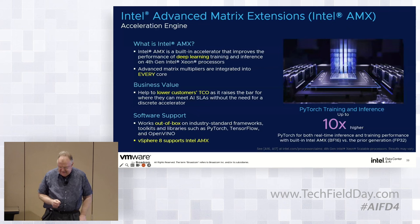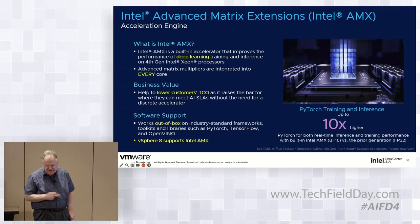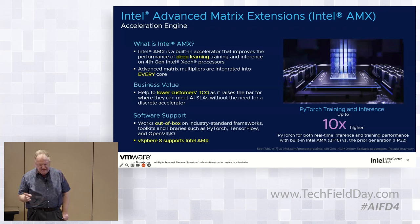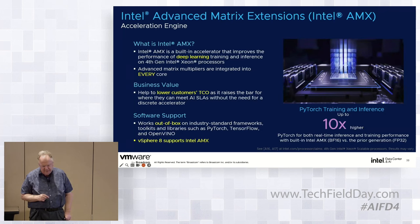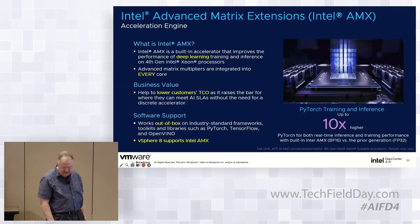AMX is an AI accelerator built into Sapphire Rapids and Emerald Rapids Xeon CPUs. The new instructions available in these CPUs are designed to work on matrices to accelerate AI and machine learning workloads. Advanced matrix multipliers are integrated into every core in the CPU. If you purchase Sapphire Rapids or Emerald Rapids servers, you can run AI workloads on the CPUs without a separate GPU accelerator, and vSphere 8 supports Intel AMX.